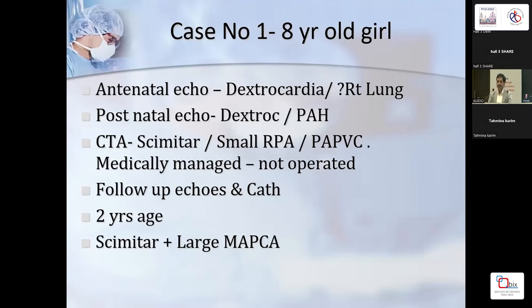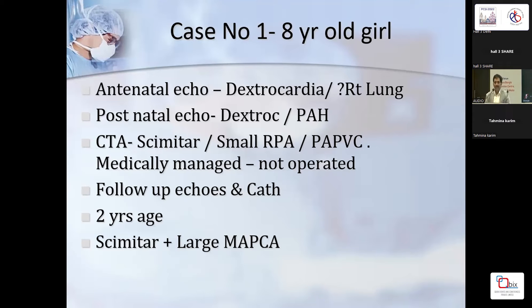The first case was an eight-year-old girl who was suspected to have dextrocardia on a TIFFA scan antenatally; she was delivered in Bangalore with doubt about the right lung and had a lot of breathlessness at birth. CT scan showed scimitar with a small right pulmonary artery and veins going into the IVC. She was medically managed and stabilized, then came to us at two years of age. We found scimitar with some pulmonary hypertension and a collateral, and she was taken up for catheterization.